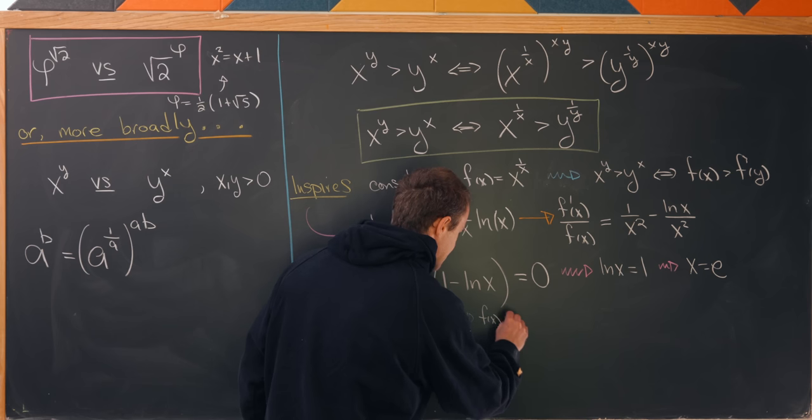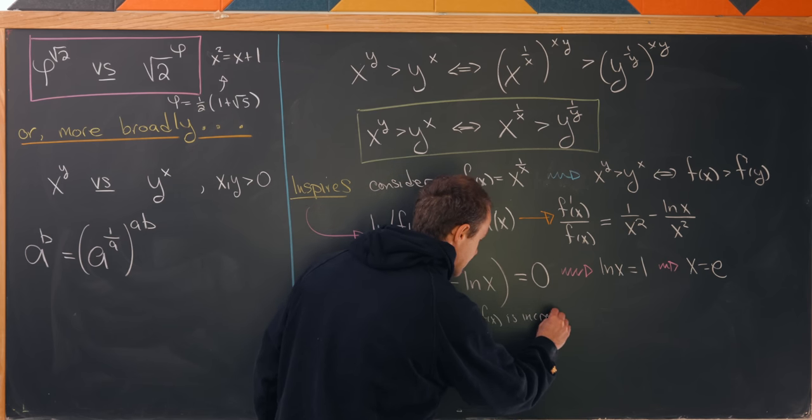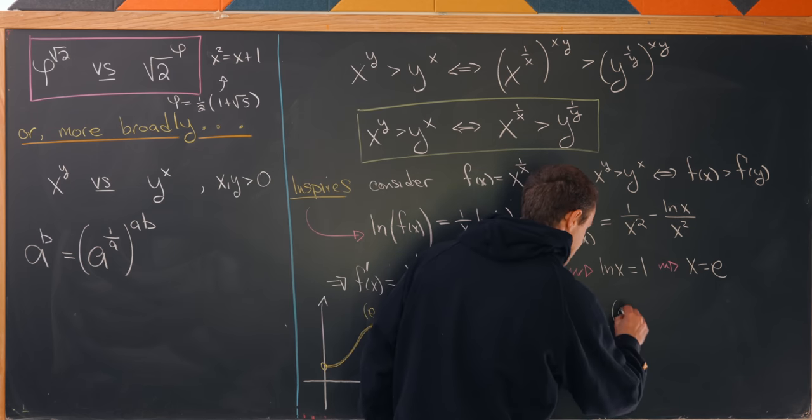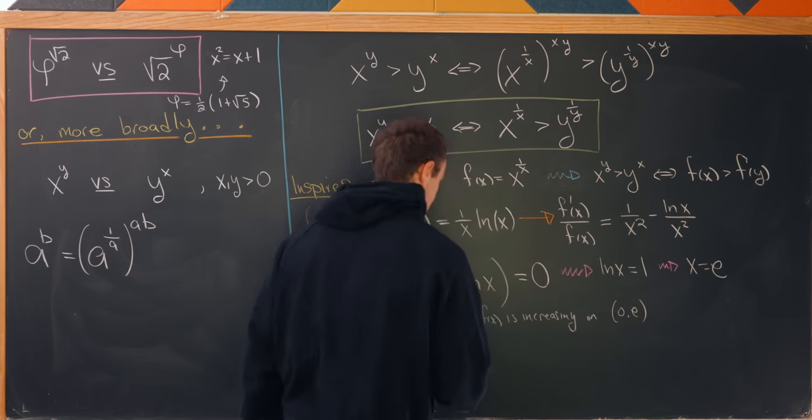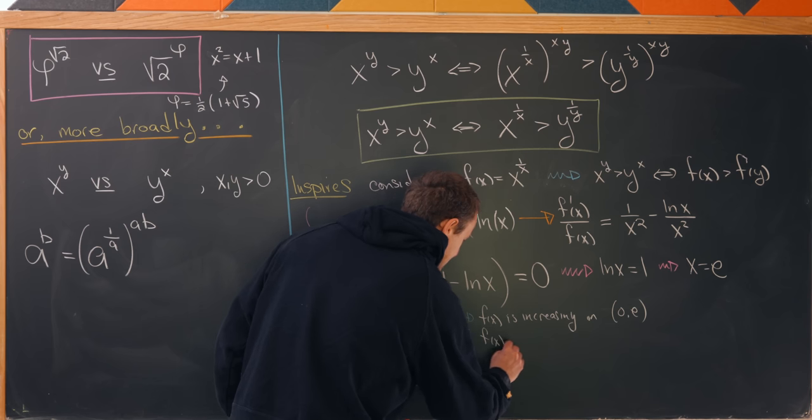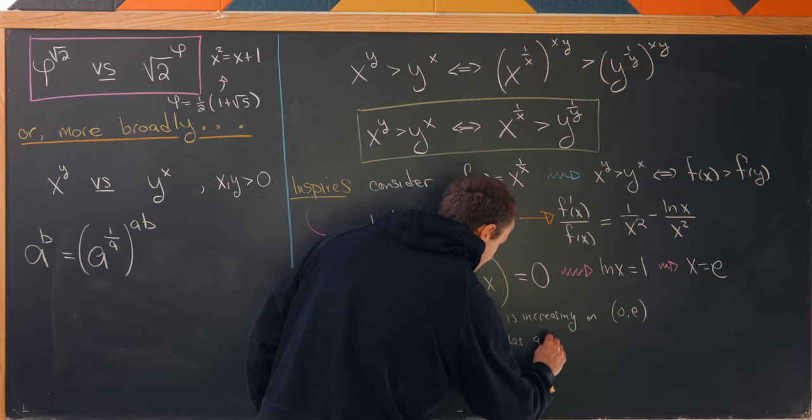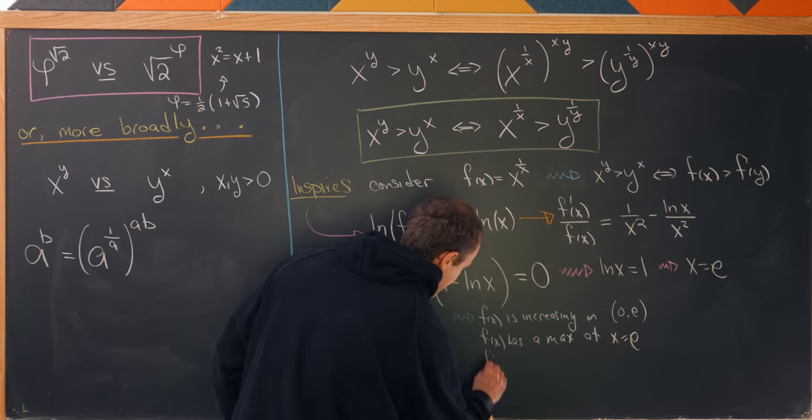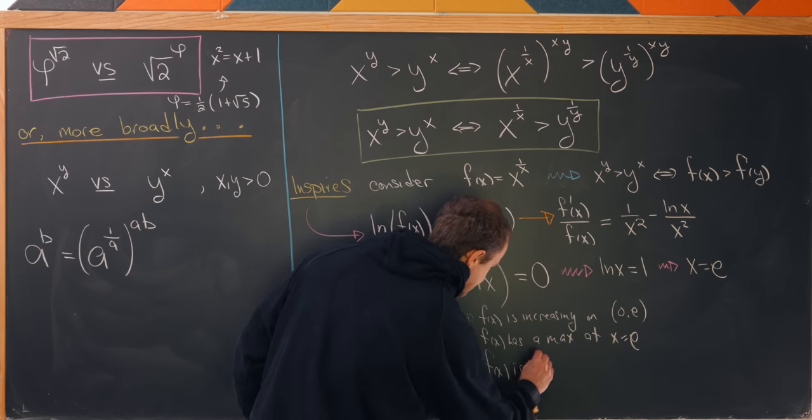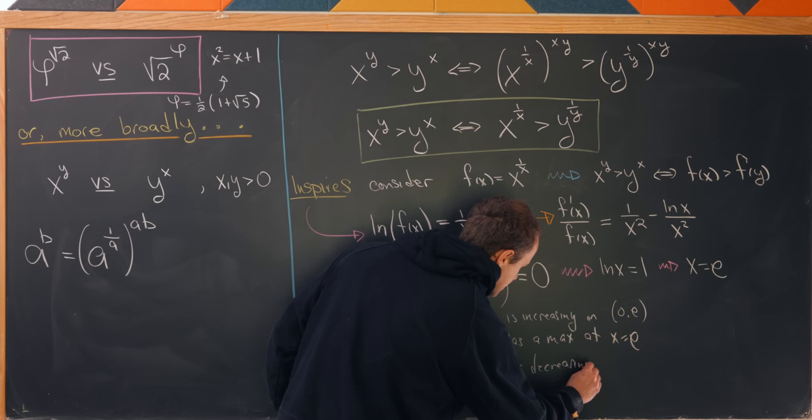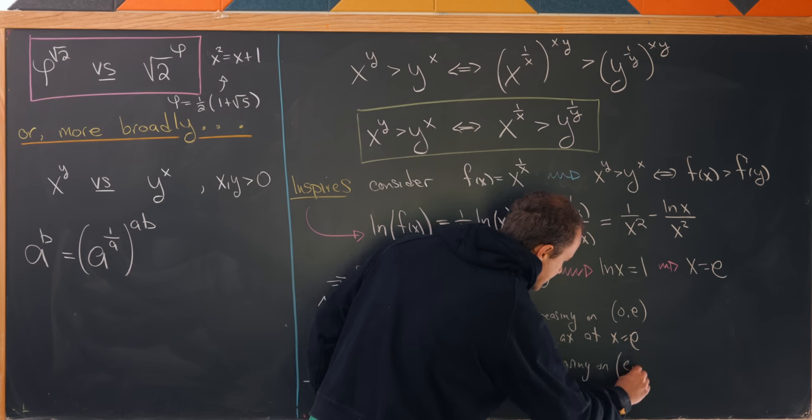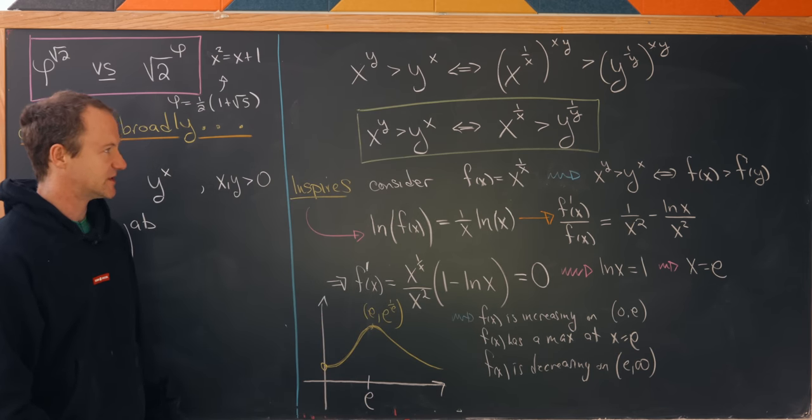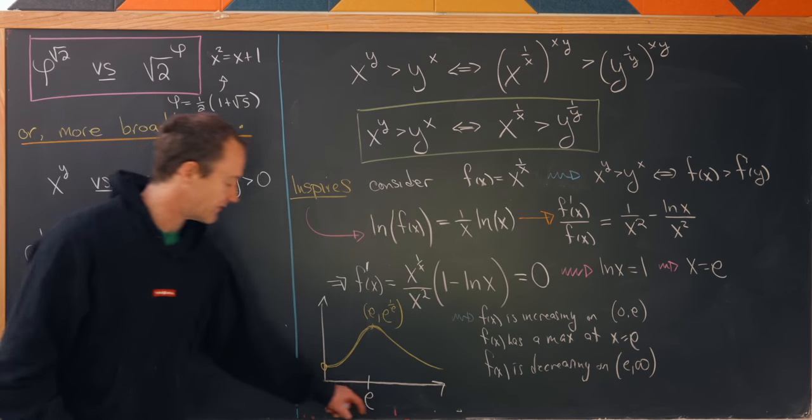So f of x is increasing on the interval 0 to e. And then f of x has a maximum at x equal to e. And then finally f of x is decreasing on the interval e to infinity. But that actually allows us to determine the answer to our question very easily.